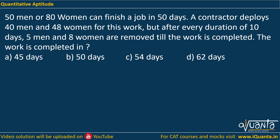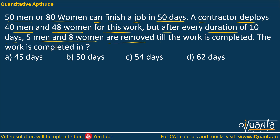Today's question is: 50 men or 80 women can finish a job in 50 days. A contractor deploys 40 men and 48 women for this work. But after every duration of 10 days, 5 men and 8 women are removed till the work is completed. The question asks: in how many days is the work completed?